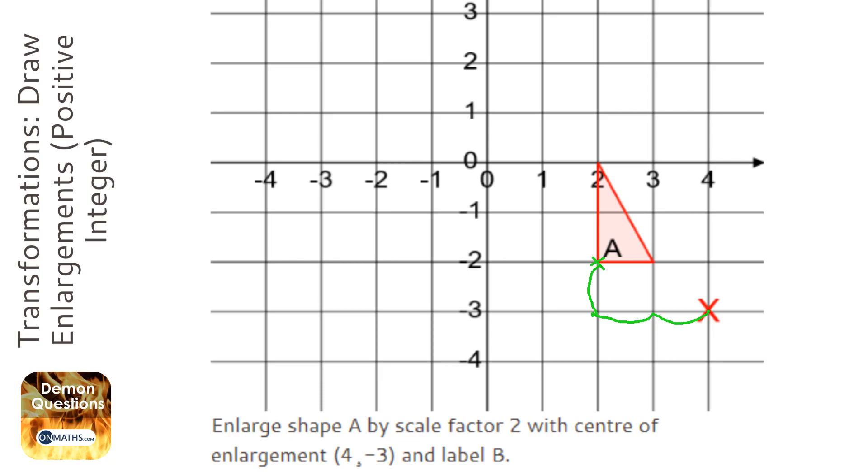And if it's scale factor 2, I've just got to do that one more time. So 1, 2 and then 1 up, so it's going to be there. I'm going to do that with the other two points. So 1 to the right, 1 up to get to this point. So I'm going to go 1 to the right, 1 up to go to the enlargement point.